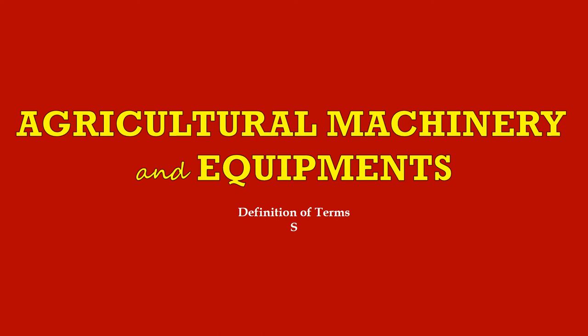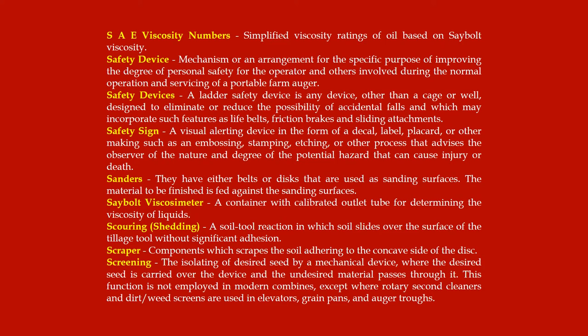Hello and welcome back again. This is Agricultural Machinery and Equipment: Definition of Terms. SAE viscosity numbers are simplified viscosity ratings of oil.